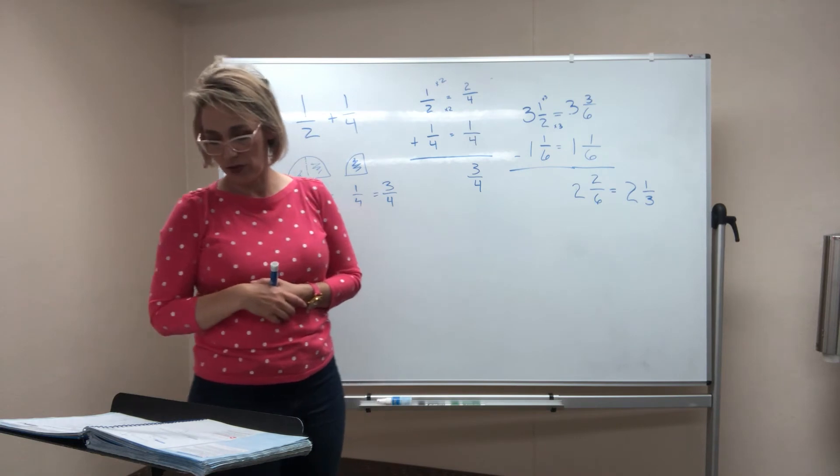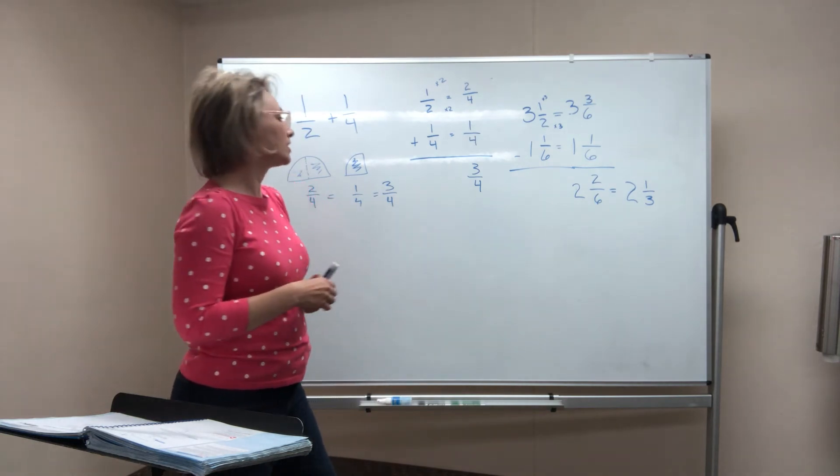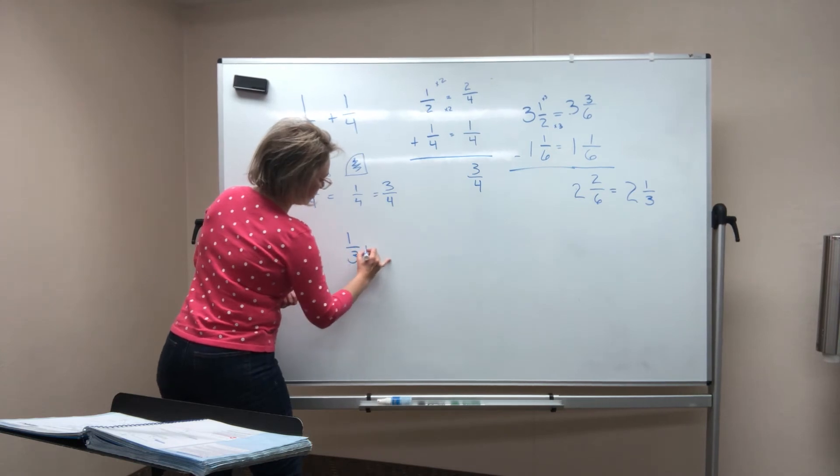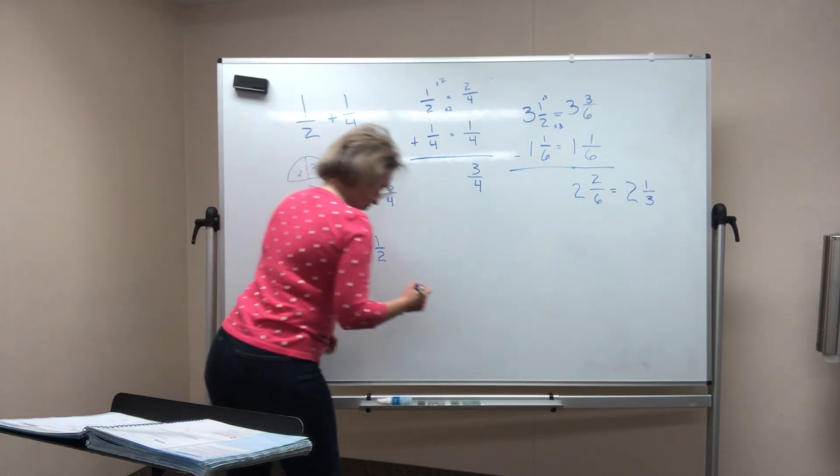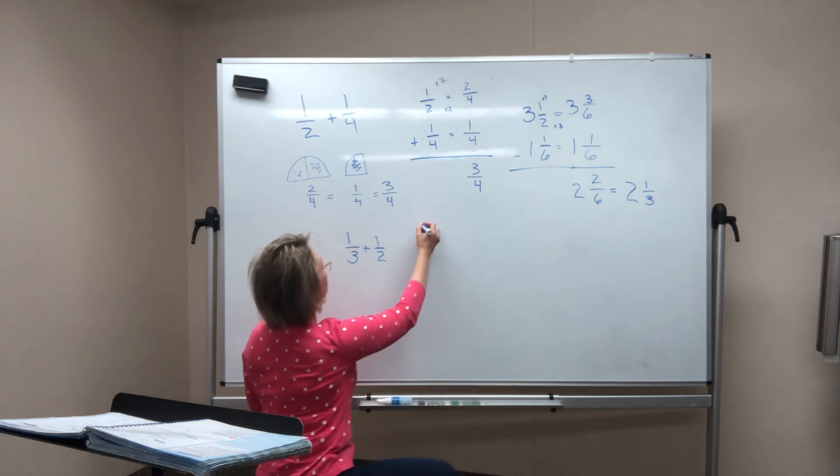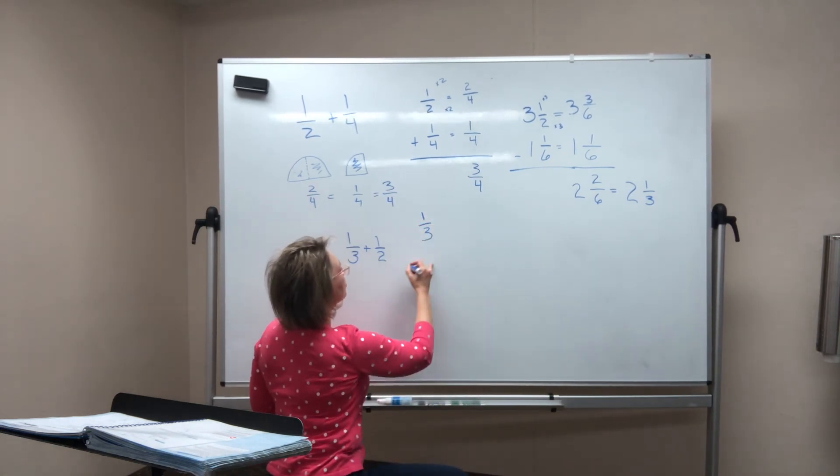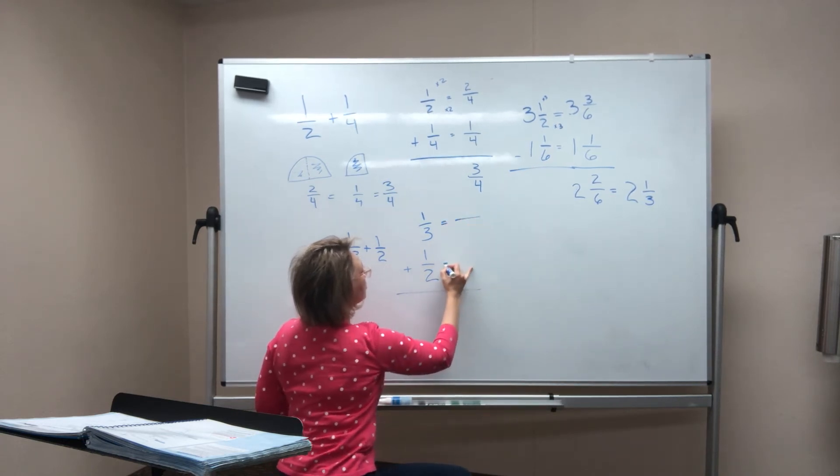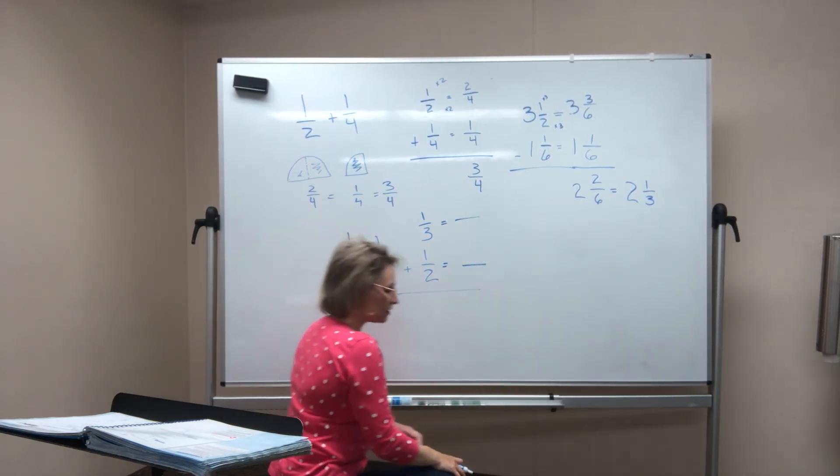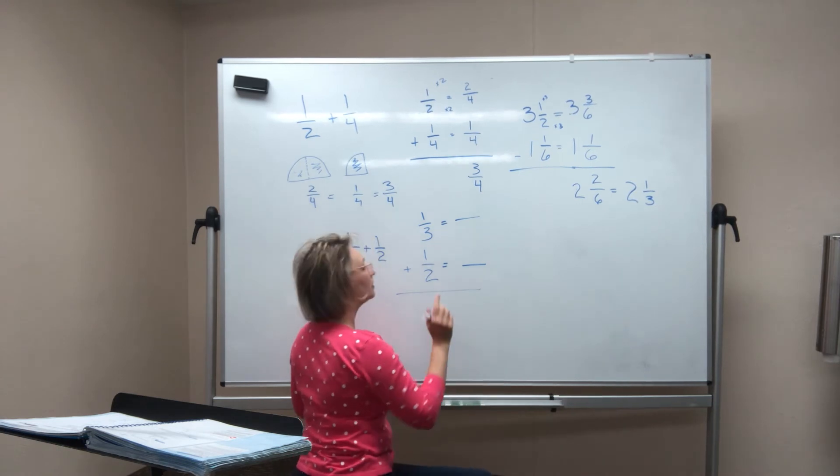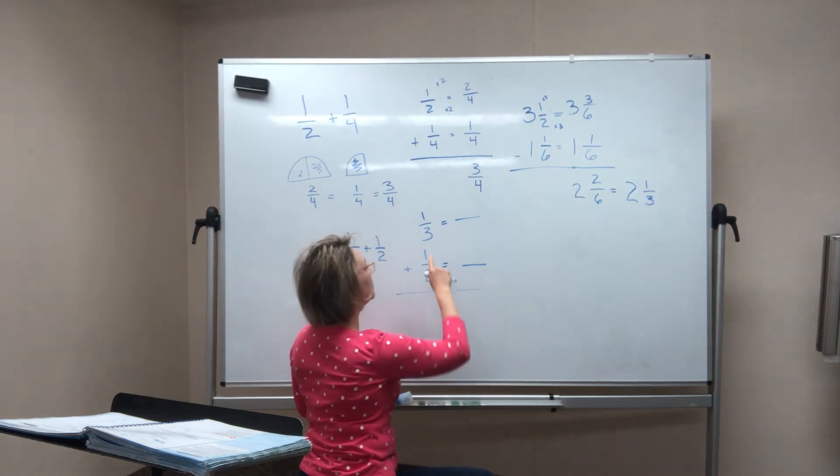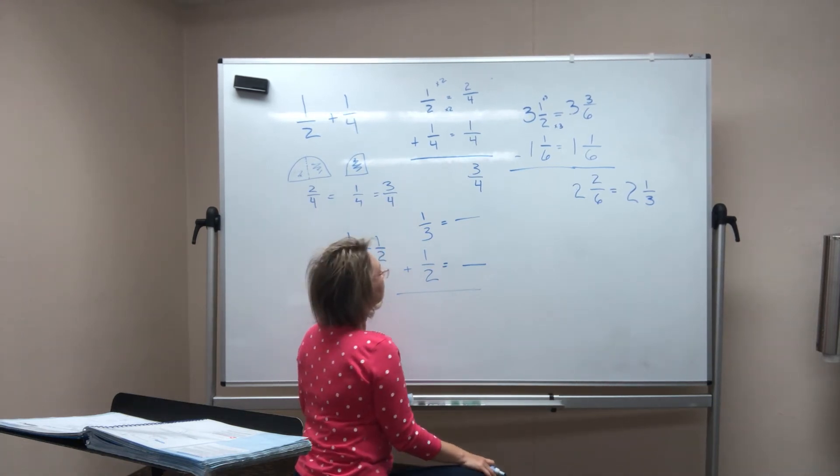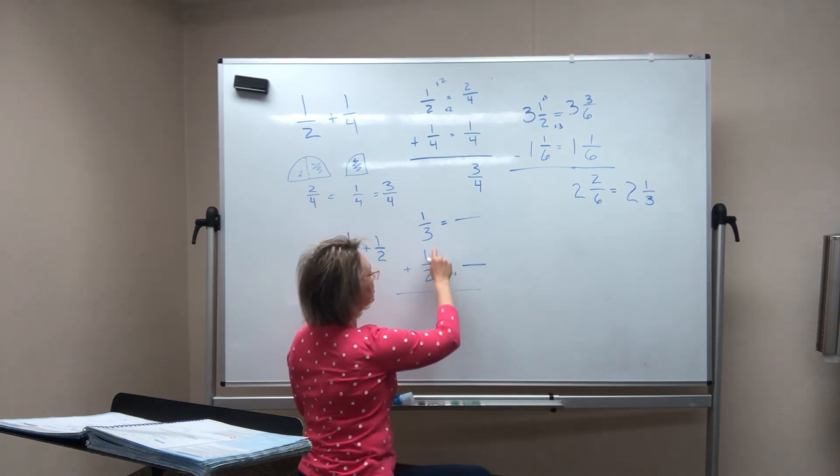The last example they gave you is one third plus one half. Let's do that down here. One third plus one half. Oh, remember, I like to do this vertically. So I'm going to do one third plus one half. Let's do our equals here.